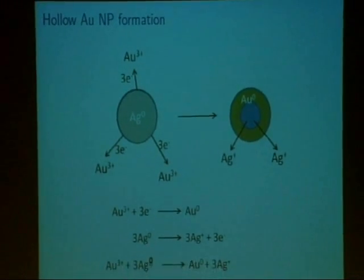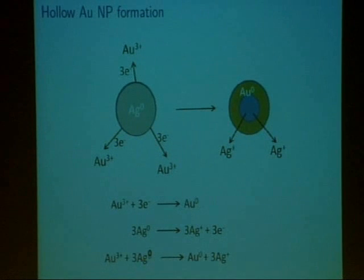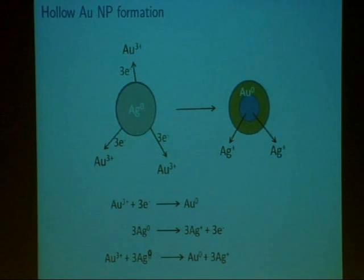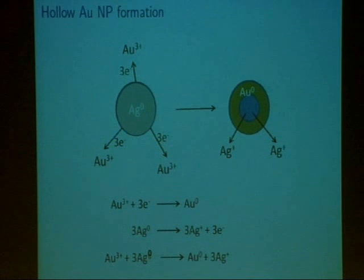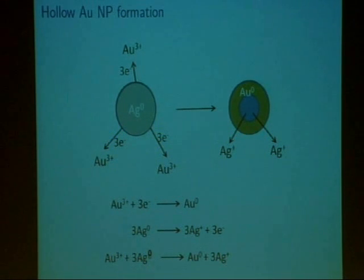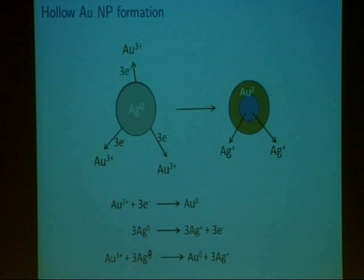We synthesize gold nanoparticles with a galvanic replacement reaction, or transmetallation reaction. First, we started with solid silver nanospheres, and then we added a solution of chloroauric acid. The chloroauric acid donates gold(III) cations to the solution, and these gold(III) cations are reduced by the silver nanospheres, giving a shell of elemental gold, while the silver is in turn oxidized and dissolves away into solution. So you get these nice, hollow, porous gold nanostructures.